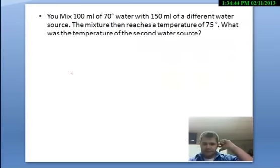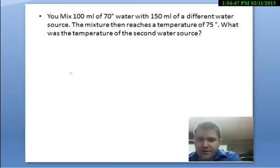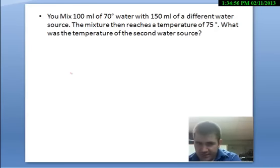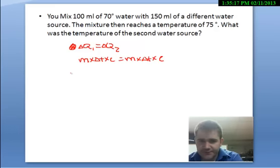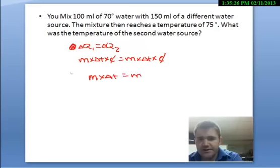Now let's try a mixing problem. You mix 100 milliliters of 70-degree water with 150 milliliters of a different water source, and the mixture reaches a temperature of 75 degrees. What was the temperature of the second water source? Because it's two samples of water, their specific heats are the same, so I use the simplified equation: mass times change in temperature equals mass times change in temperature.